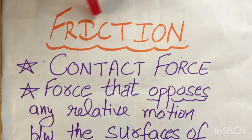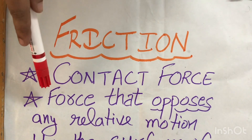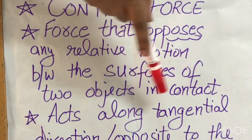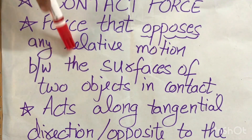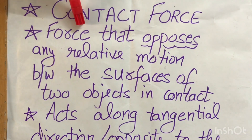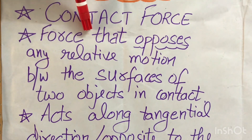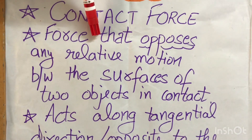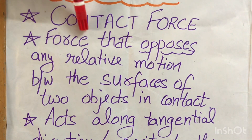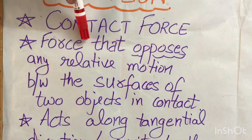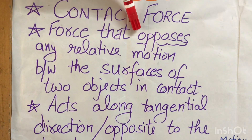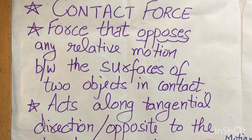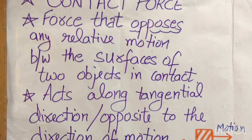So what exactly is friction? It is a type of force that will oppose any relative motion between the surfaces of two objects in contact. In short, friction is the force which will hold back or oppose any kind of motion between two objects in contact.